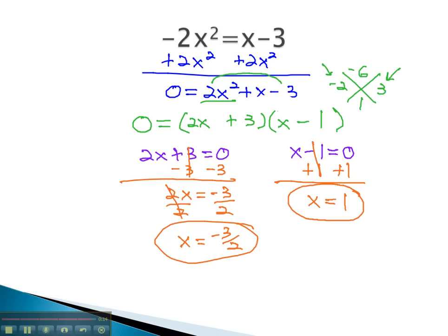By first setting the equation equal to 0, we can then factor and set each factor equal to 0 to solve any equation that has an x squared in the problem.